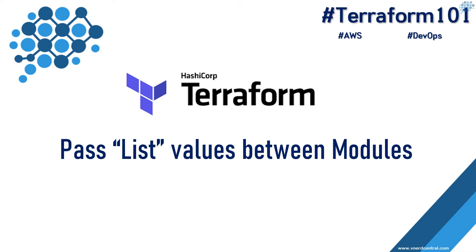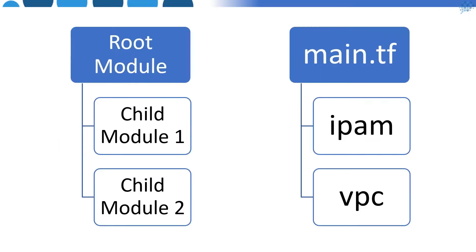Let's get to it. For demonstration purposes I'm going to use two different services. There is a root module main.tf, and as the first child module I'm using IPAM, which is the IP Address Management service from Amazon, and the other child module is VPC.